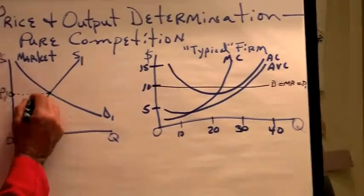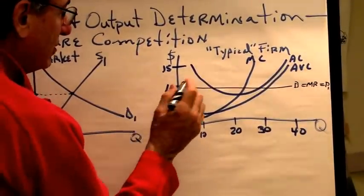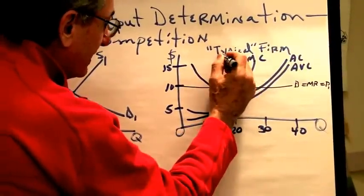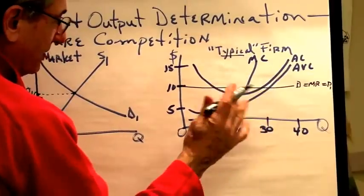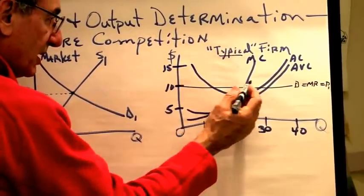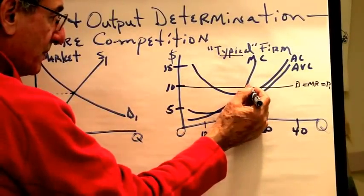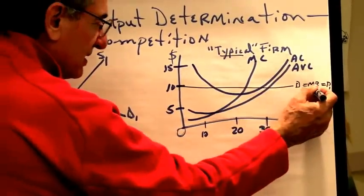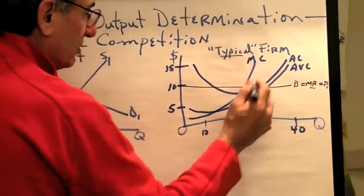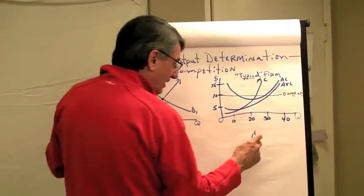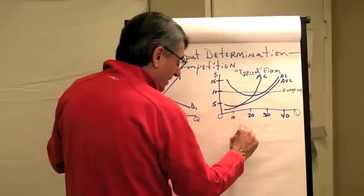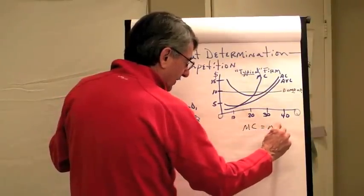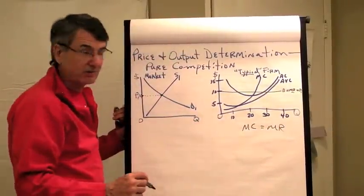If the price is $10, and this is the typical firm's cost curves in this industry — this is marginal revenue, that's marginal cost — you produce the quantity where marginal cost equals marginal revenue, and it's the logic that matters most.